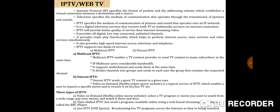IP TV supports two kinds of services: first, multicast IP TV, and second, unicast IP TV. In the case of multicast IP TV, it enables a TV content provider to send TV content to many subscribers at the same time. IP multicast saves considerable bandwidth. It also supports multi-channel and sends them at the same time. It divides channels into groups and sends to each user the group that contains the requested channel.